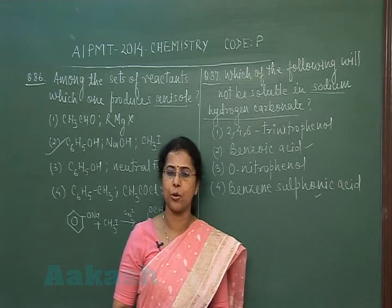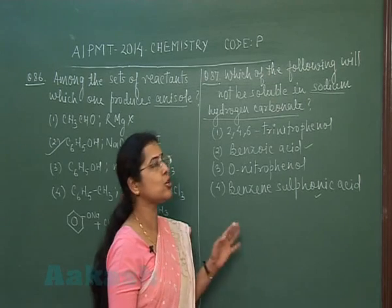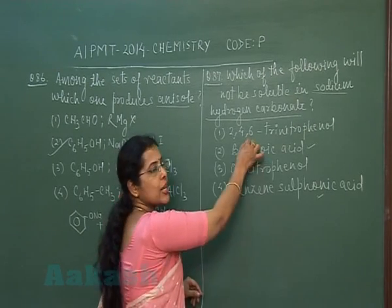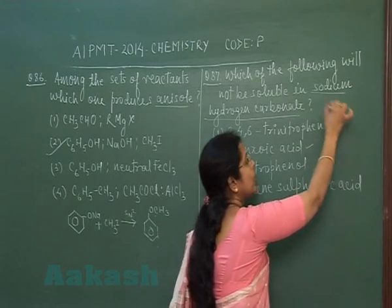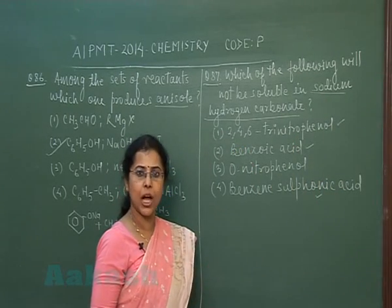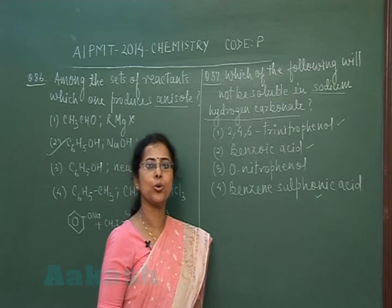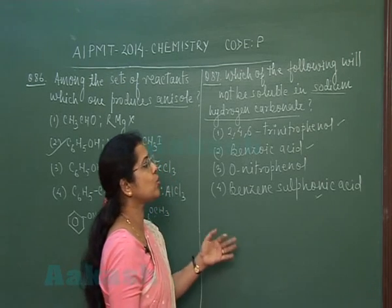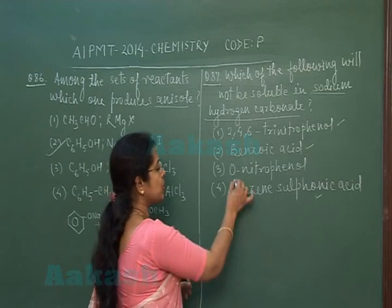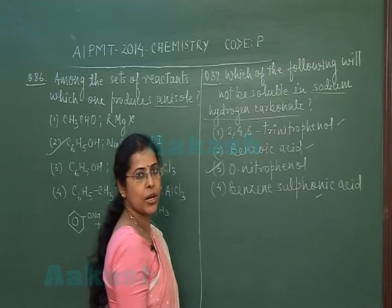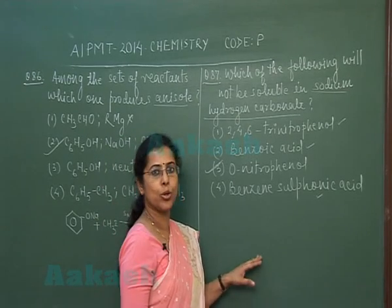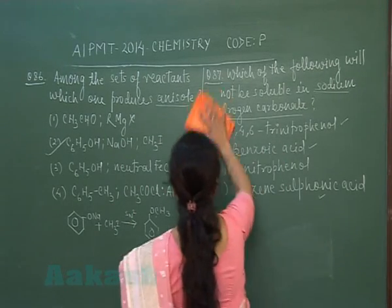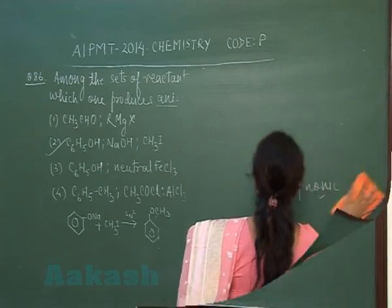2,4,6-trinitrophenol: phenol itself does not react with sodium bicarbonate, but when three nitro groups are attached, its acidic strength exceeds that of carboxylic acids. This is known as picric acid, and picric acid also gives effervescence with sodium bicarbonate. The remaining option, orthonitrophenol — neither phenol nor mononitrophenol reacts with sodium hydrogen carbonate — so it will not be soluble. Correct option is option 3.